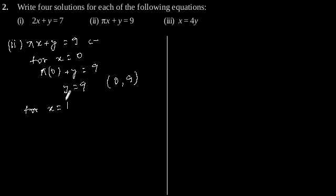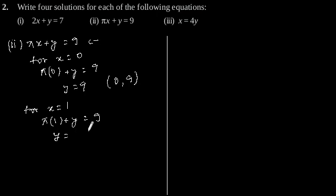Now let's put x is equal to 1. By putting x is equal to 1 in the given equation, we will get π into 1 plus y is equal to 9. This gives y is equal to 9 minus π. So our second solution for the given equation is (1, 9 minus π).